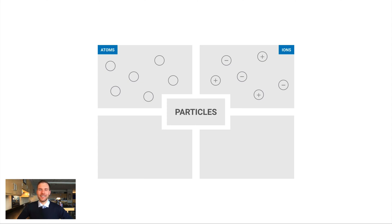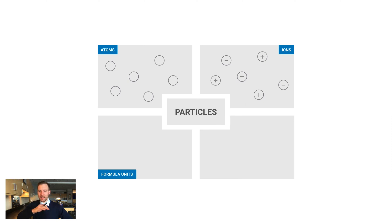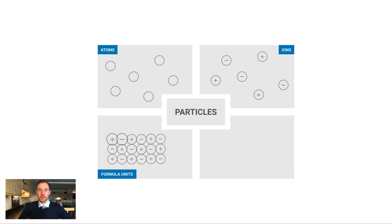Particles could also be ions — sodium ions, copper ions, or chloride ions, for example. Formula units are a little tricky — it's something you probably haven't heard before. A formula unit is for an ionic substance, meaning a substance held together by ionic bonds — metals and nonmetals together. These substances exist as crystal lattices, repeating 3D structures of positive and negative charges. A formula unit is simply the smallest proportion of that crystal lattice structure.